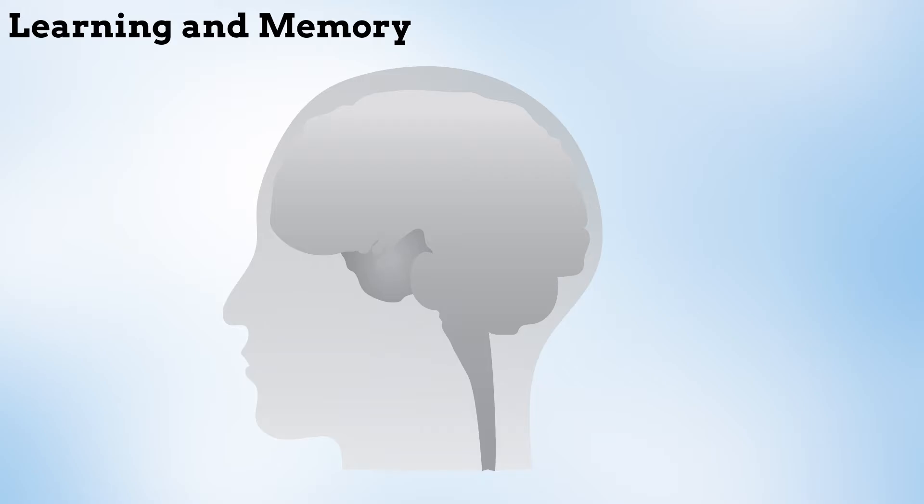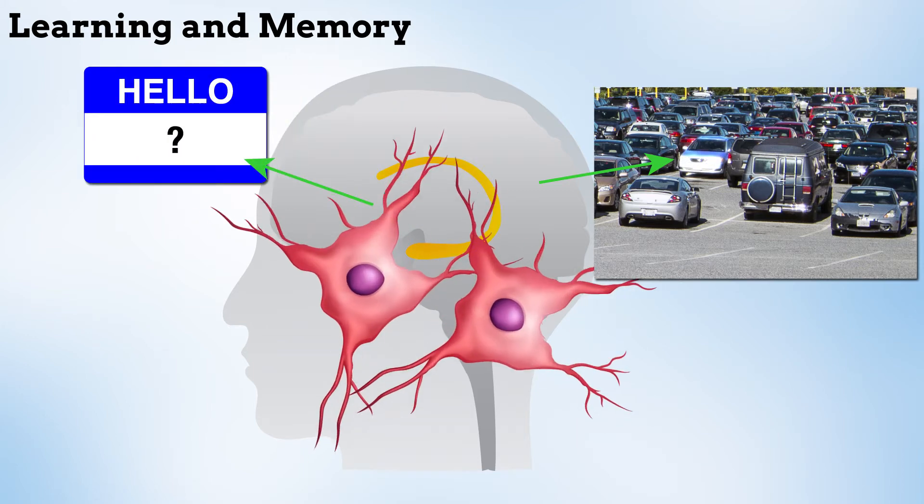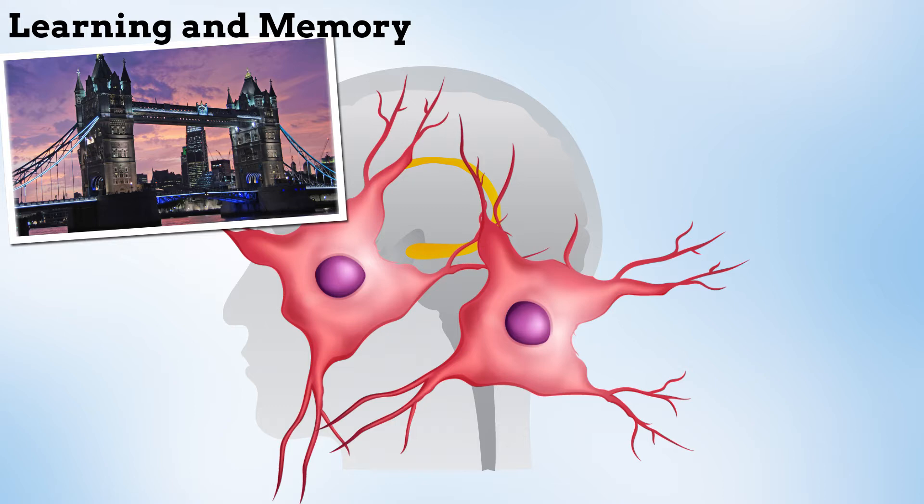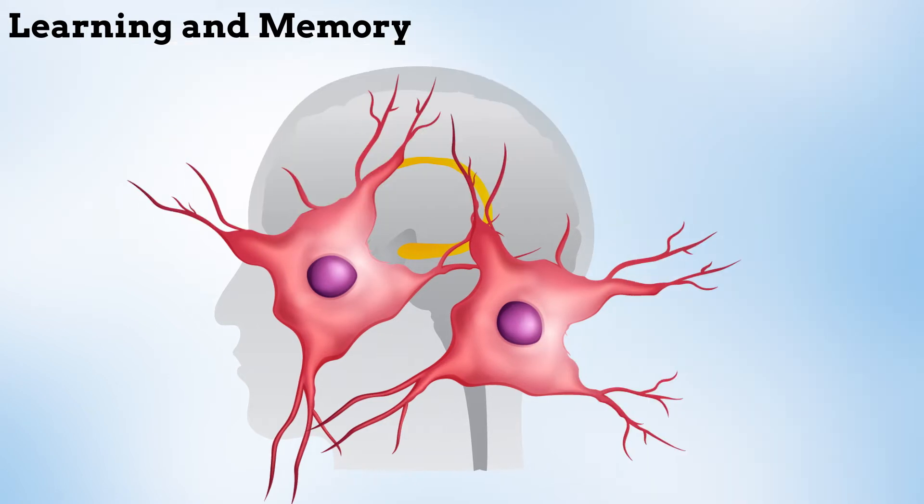Learning and memory are essential brain functions that enable us to find our car in the parking lot or recall a person's name. Neurons in specific brain regions create memories in response to a variety of experiences. However, some aspects of memory formation remain a mystery.